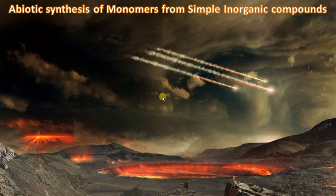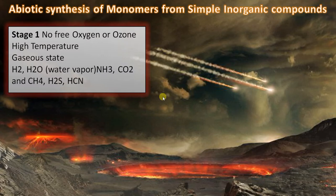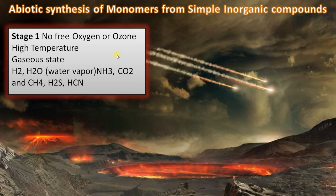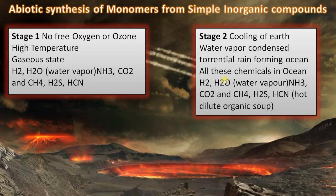Now let us understand each step. Step one is the abiotic synthesis of monomers from simple inorganic compounds. According to this theory, the primitive atmosphere had an extreme environment with no free oxygen or ozone, high temperatures, and everything in gaseous state: hydrogen, water vapor, ammonia, carbon dioxide, methane, hydrogen sulfide, and hydrogen cyanide — primarily due to volcanic eruptions. Gradually the Earth started cooling, water vapor condensed, and torrential rains formed oceans.